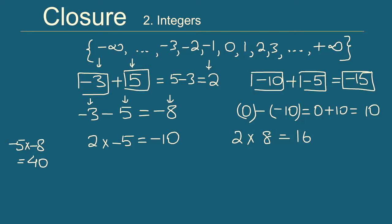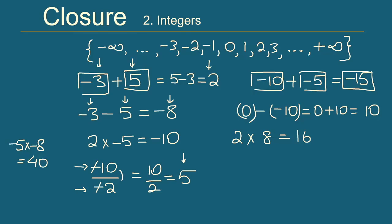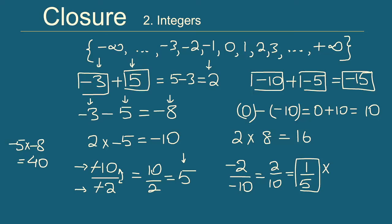What about division? Take minus 10 divided by minus 2 — the negatives cancel, giving 10/2, which is 5, an integer. But if we reverse the order: minus 2 divided by minus 10 gives 2/10 or 1/5, which is not an integer. So integers are not closed under division. To summarize for integers: closed under addition, subtraction, and multiplication, but not under division.